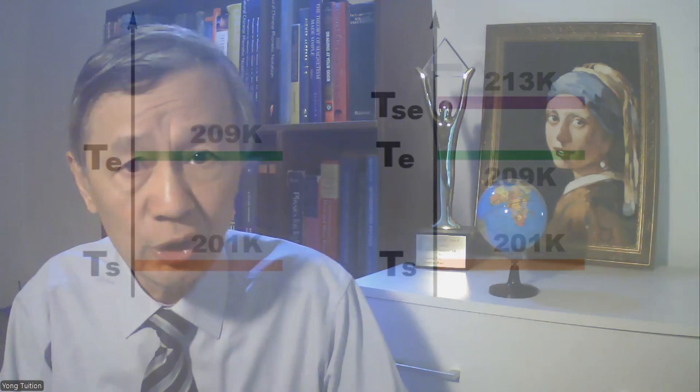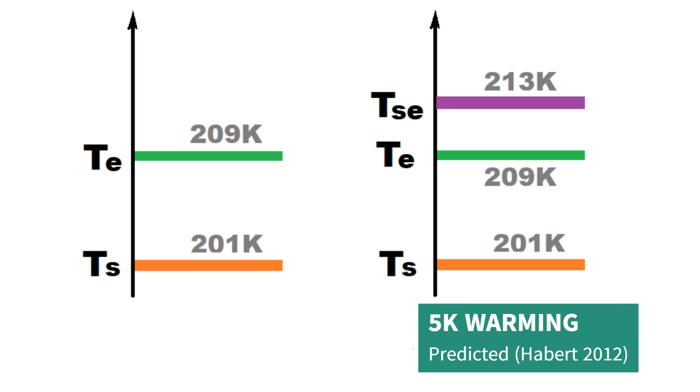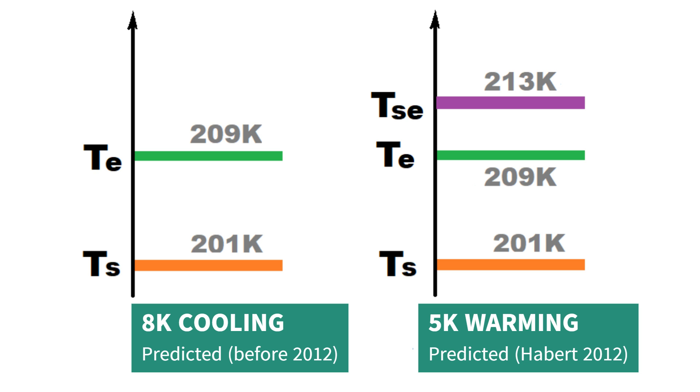In this way, he concluded the true greenhouse effect on Mars should be positive 5K or warming, that is 214 minus 209. Without adopting his proposal, the greenhouse effect on Mars would be negative 8K or 201 minus 209, which means cooling. That's to say, CO2 and other greenhouse gases actually make the surface of Mars 8K colder, without adopting Haberle's new definition of GMST. Now, the greenhouse effect is positive 5K, according to him.